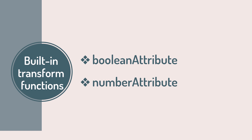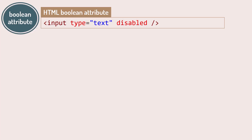Instead of creating a custom transform function, we could use one of Angular's built-in transform functions. Two of the built-in transform functions are booleanAttribute and numberAttribute. As the names imply, booleanAttribute transforms a string to a boolean value (true or false), and numberAttribute transforms a string to a numeric value. The booleanAttribute is especially useful if you want your input properties to work like HTML boolean attributes. In HTML, a boolean attribute is true if it is present — otherwise it's false.